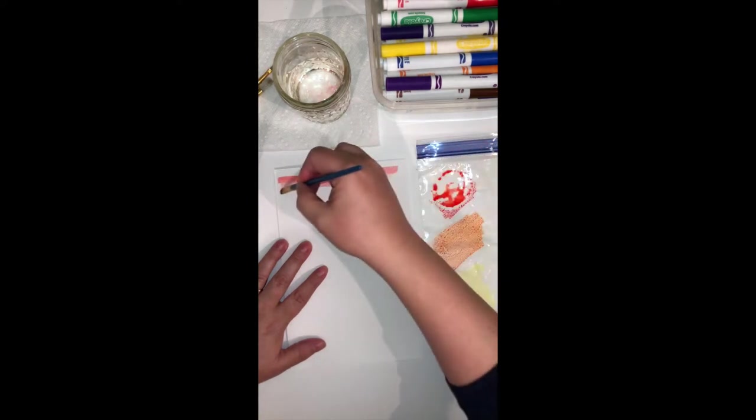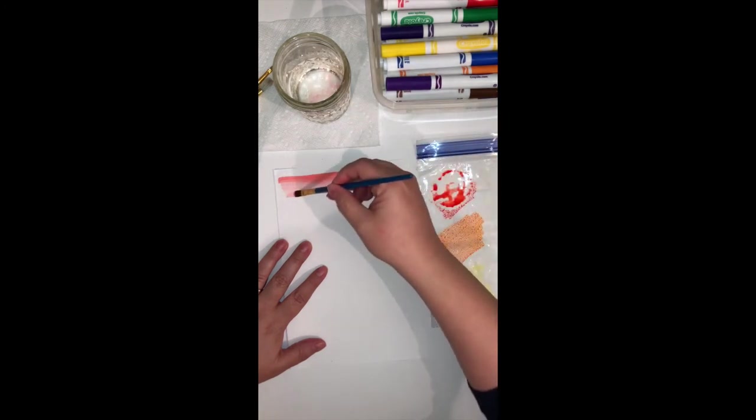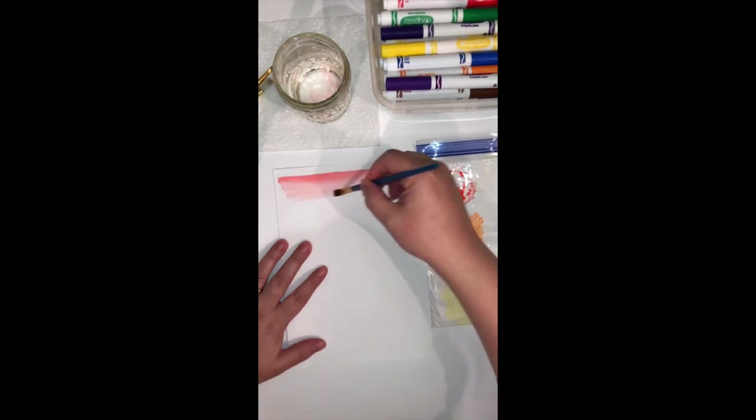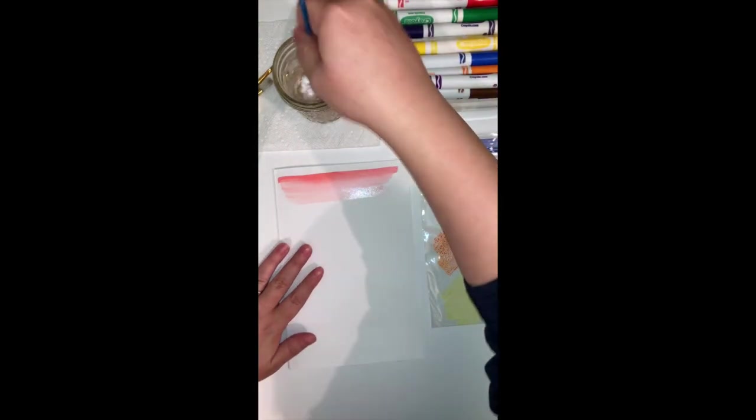The more water that you add to your brush, the lighter your paint will become. You can see I'm gradually getting lighter and lighter—that is called a gradient.